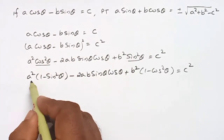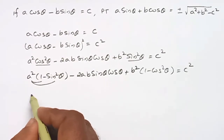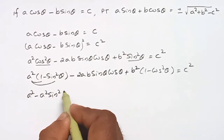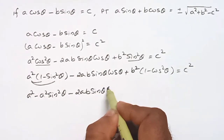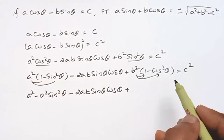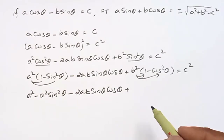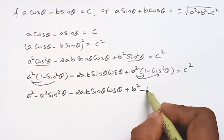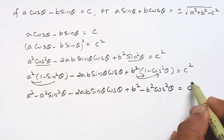Expanding: A squared minus A squared sin squared theta minus 2AB sin theta cos theta plus B squared minus B squared cos squared theta is equal to C squared.